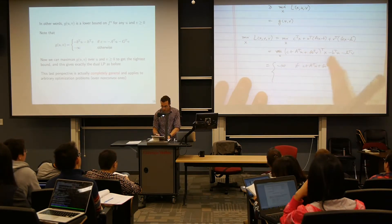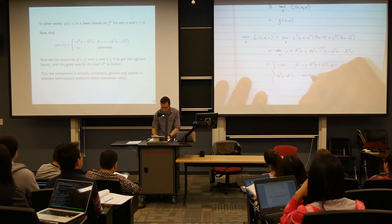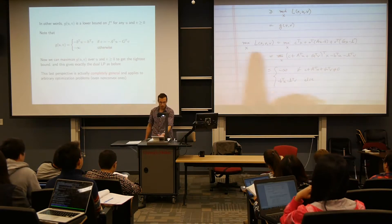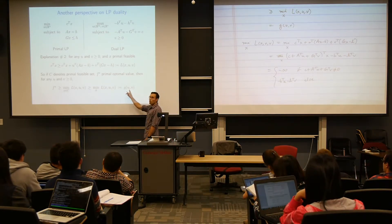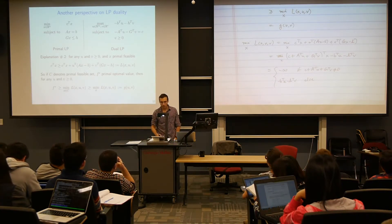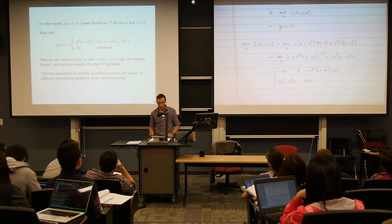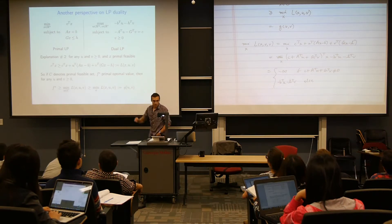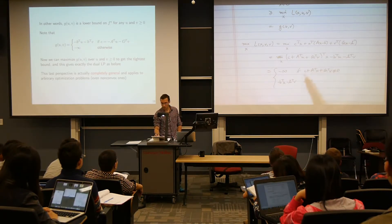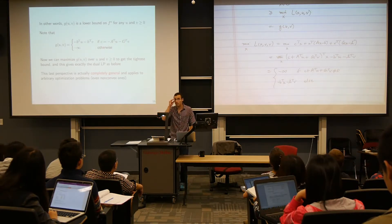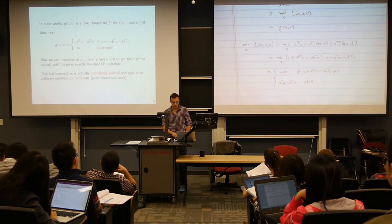So this ends up being minus infinity if c plus A transpose u plus G transpose v is not equal to zero. And otherwise, if this is zero, all we get is minus b transpose u minus h transpose v. We've actually constructed the minimum of the Lagrangian. The dual problem is to maximize this lower bound over all u and v to get the tightest lower bound possible. And you can see we have the Lagrange dual function g(u, v). If I maximize this over all u and v with v bigger than or equal to zero, because we get minus infinity if the equality is not satisfied, that becomes a constraint of the dual problem: c must equal minus A transpose u minus G transpose v. And if the constraint holds, the criterion is minus b transpose u minus h transpose v.